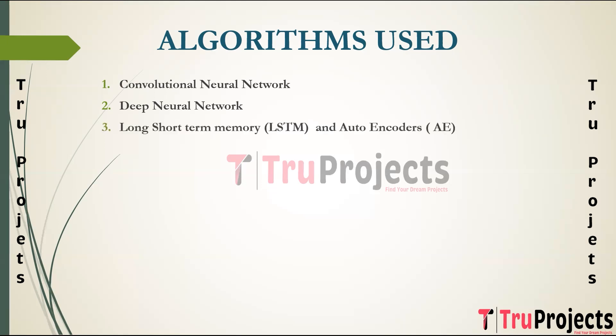The next algorithm is Long Short-Term Memory with Autoencoders (LSTM-AE). LSTM is a type of recurrent neural network architecture designed to capture long-term dependencies in sequential data. LSTMs are equipped with memory cells and gating mechanisms that enable them to retain and selectively update information over extended sequences. Autoencoders are a type of neural network architecture used for unsupervised learning, consisting of an encoder and a decoder trained to reconstruct its input data. They are often used for dimensionality reduction and feature engineering.